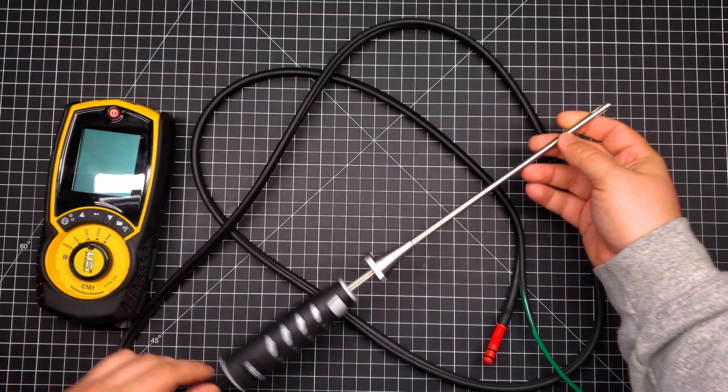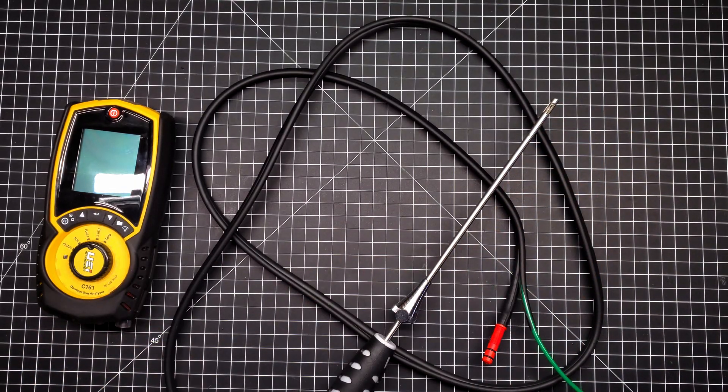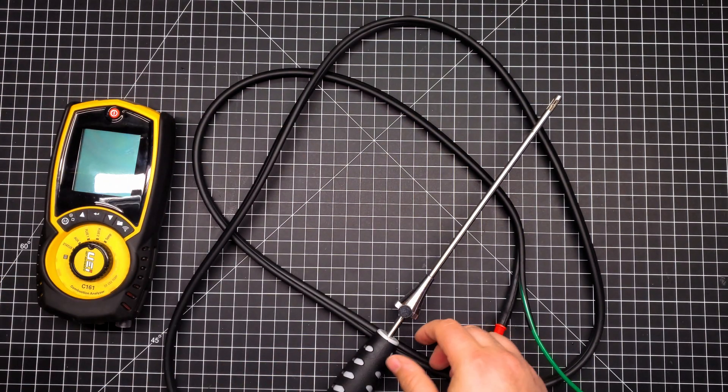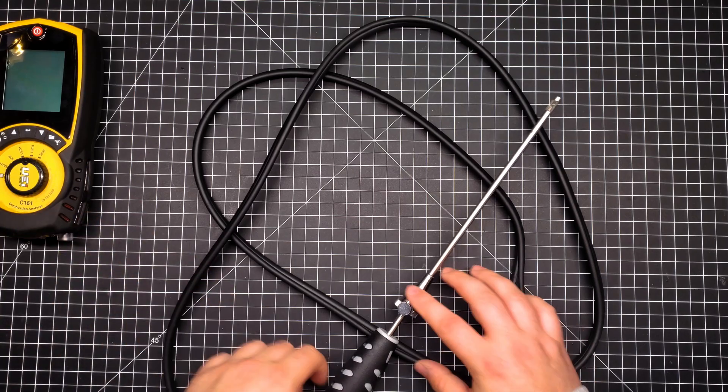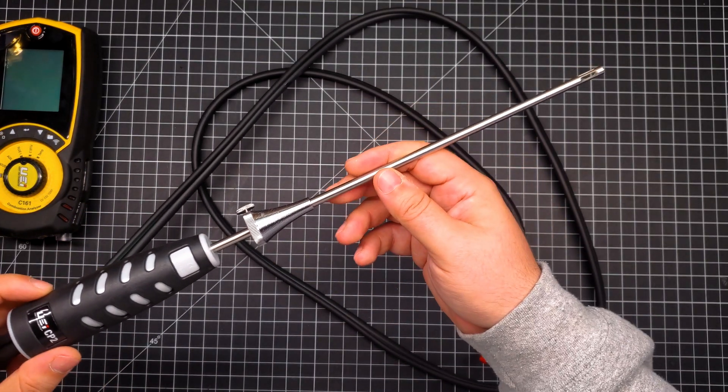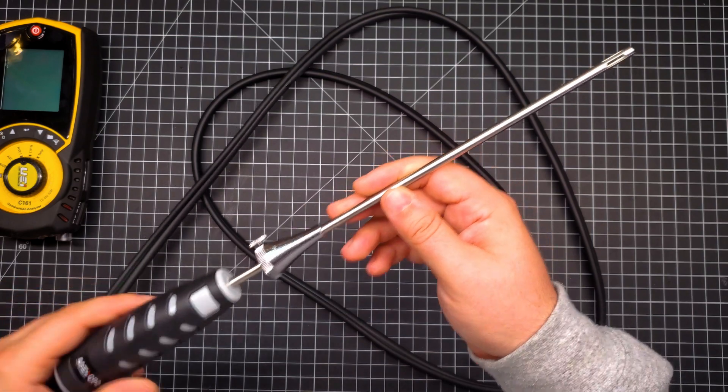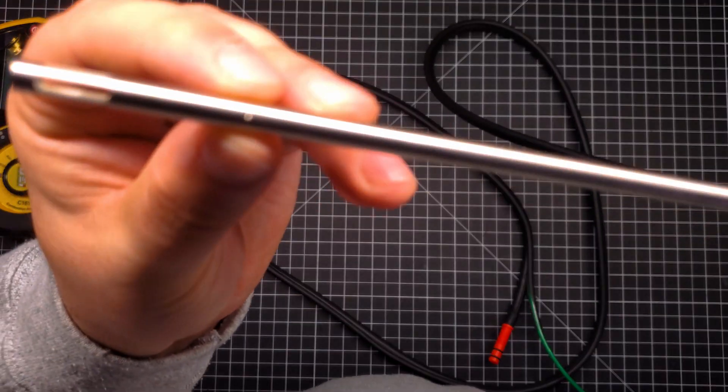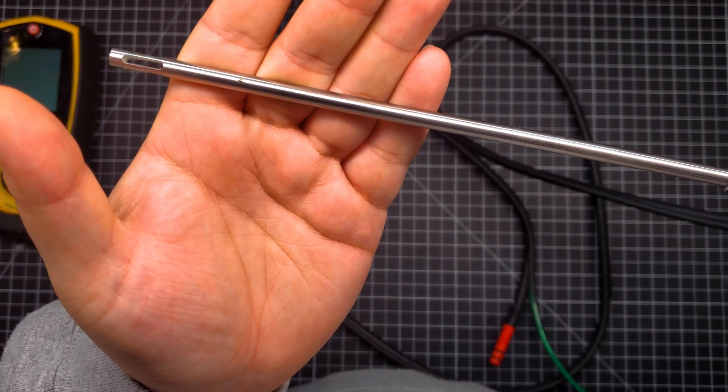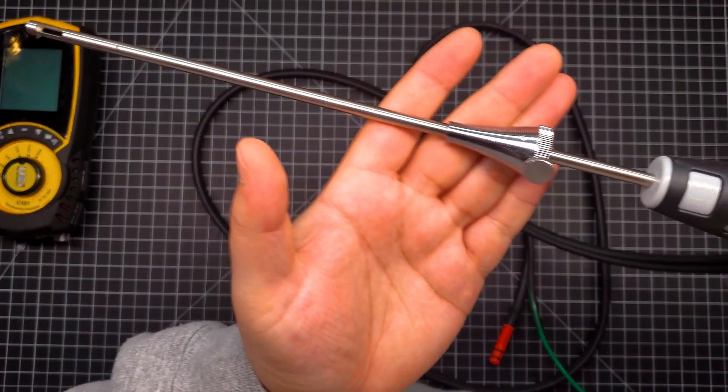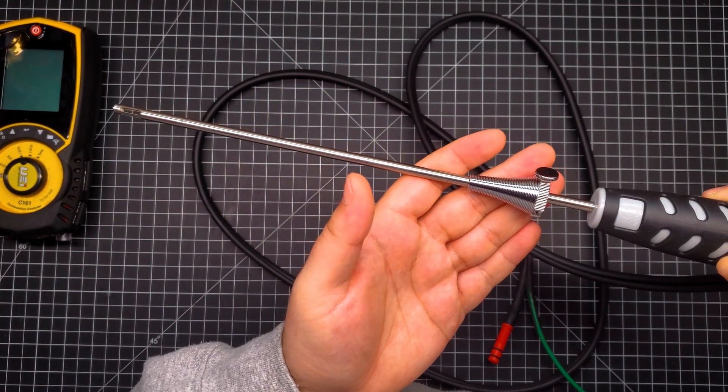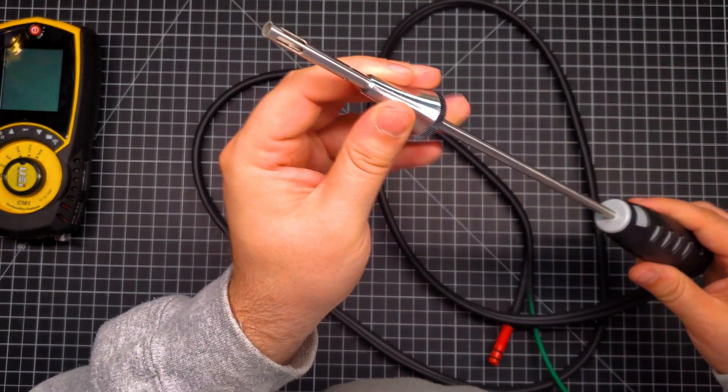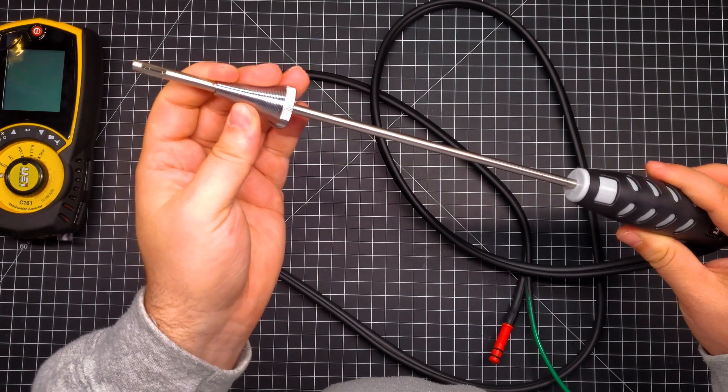As far as flue probes go, this is my new favorite. I have a Bacharach flue probe here and I'm going to go over a little bit why I like the CP2 flue probe that Kane and UEI sell. Now a pro and a con depending on some is it has little notches to hold the cone in place so it doesn't slide off which is something nice. However, I would have liked to see notches cut into the cone so that it could be removed if you so choose.